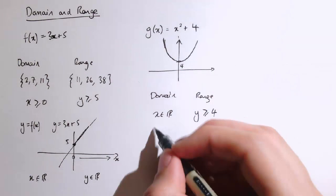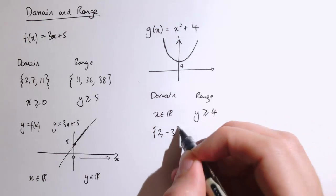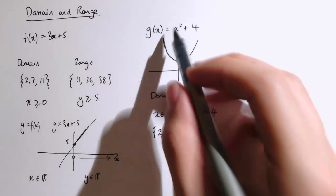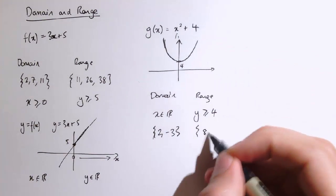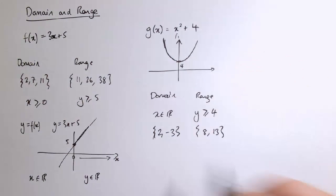If I just restrict the domain to a few values like 2 and -3, then the range would be 2² + 4 which is 8, and (-3)² which is 9 plus 4 is 13. So different values there.